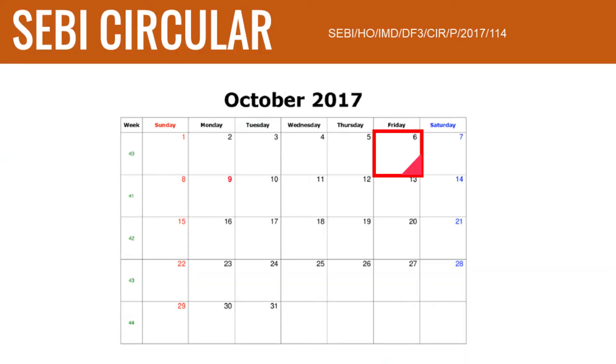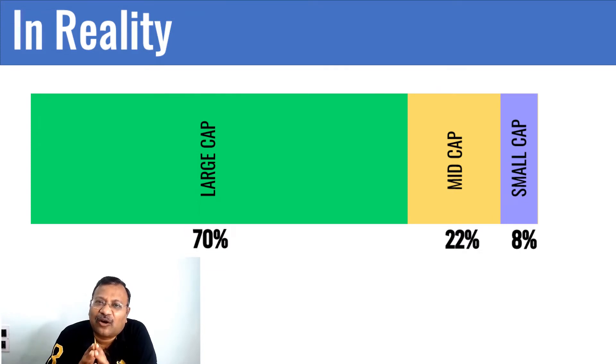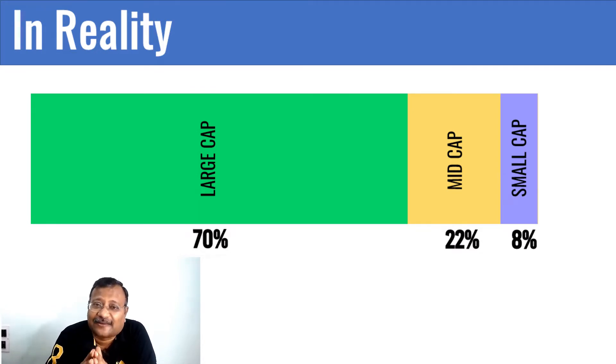The October 2017 circular stated that a multi-cap fund should invest a minimum of 65 percent of its assets in stocks of large cap, mid cap, and small cap companies, with the remaining 35 percent being discretionary. However, there were no separate benchmarks or percentage allocations specified within that 65 percent. As a result, a large number of funds were investing about 70 percent in large cap stocks, 20 to 22 percent in mid cap, and only about 8 percent in small cap.